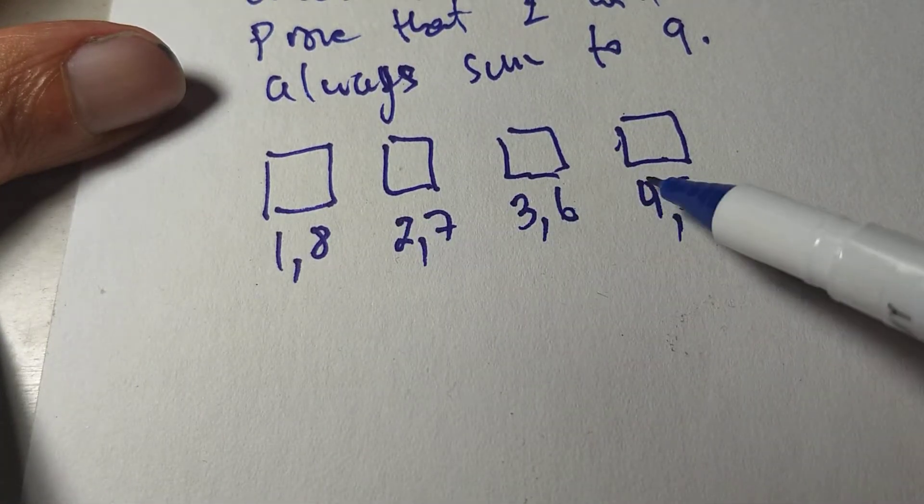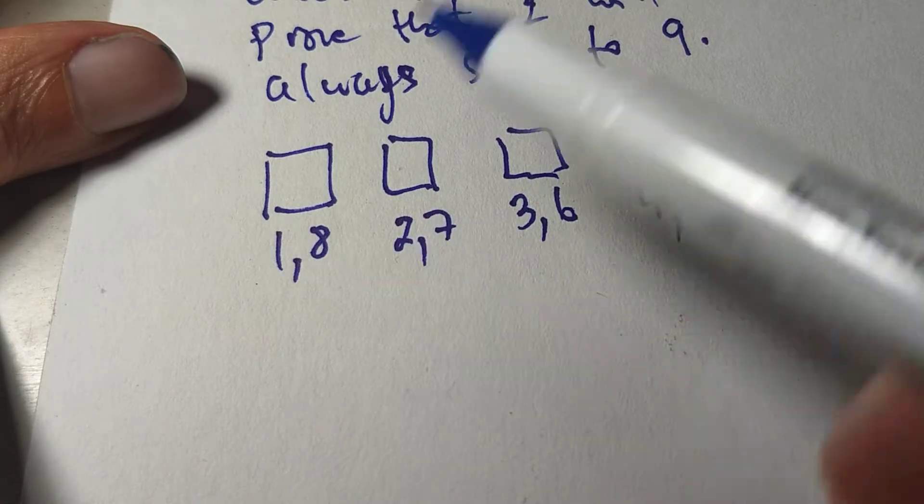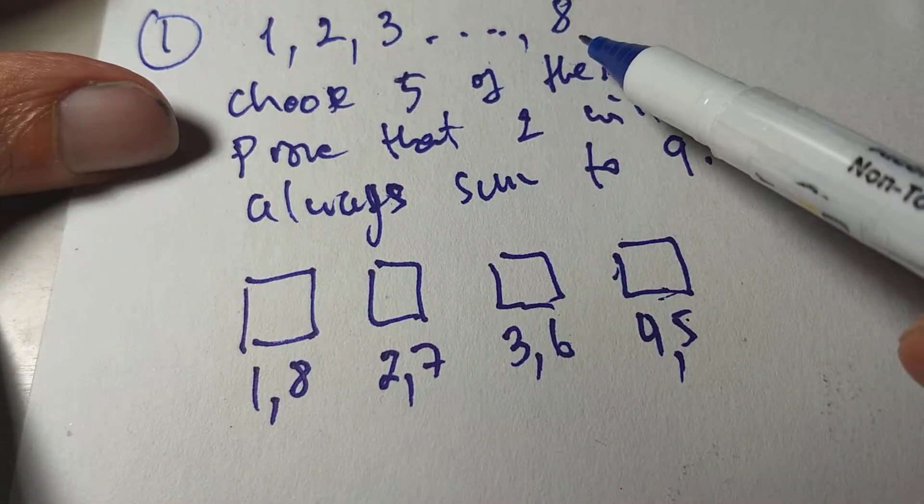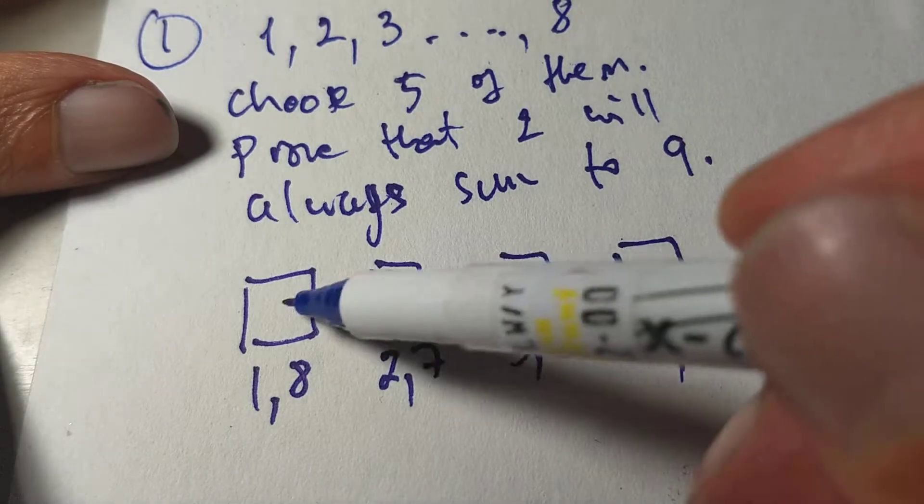Now look carefully. One, two, three, four, five, six, seven, eight. I have exhausted all of the numbers. All of them can be accounted for here.